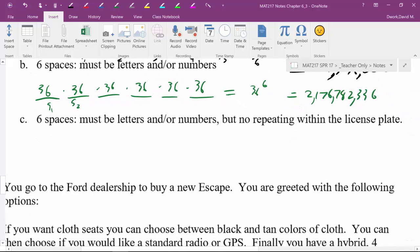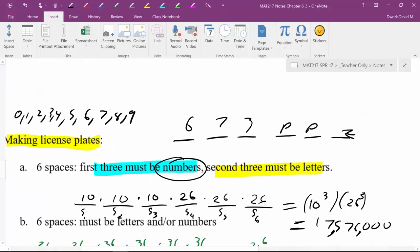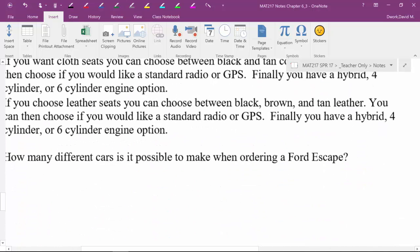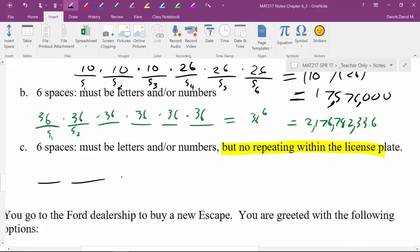Now what if you have the requirement that no repeats were allowed? And we could play all sorts of games. For example, you could say O's and zeros get confused, so we're only going to allow zero. There's all sorts of different games you can play. So I'm going to give you one example of that, which is just the idea of no repeating. So once you use a letter or a number, you can't use it again. For example, my old license plate would not be okay because it has two P's in it. So six spaces, one, two, three, four, five, six, and they can be letters or numbers, just like the last problem, but no repeating allowed. Give it a try.